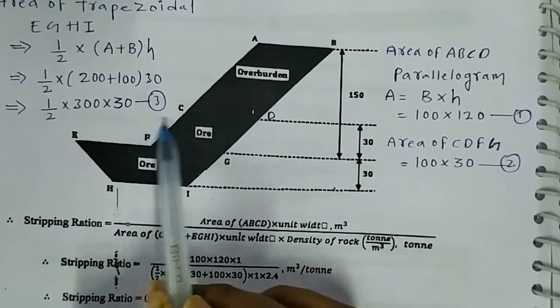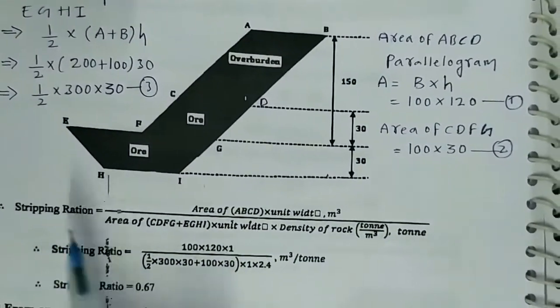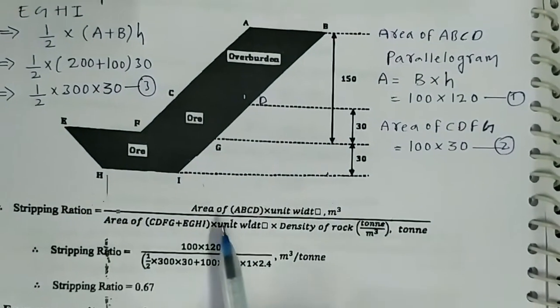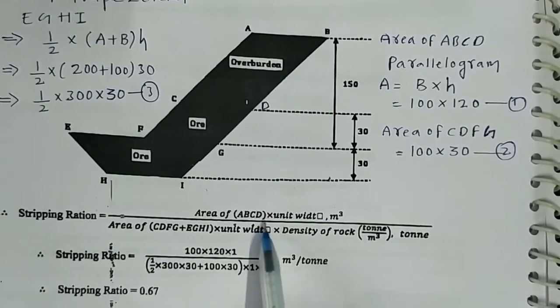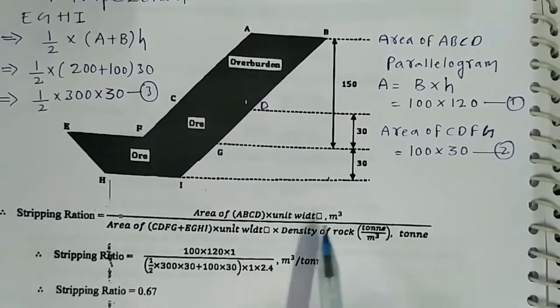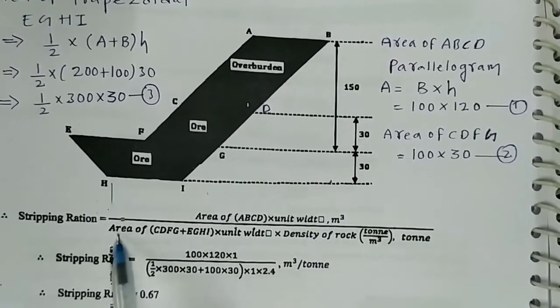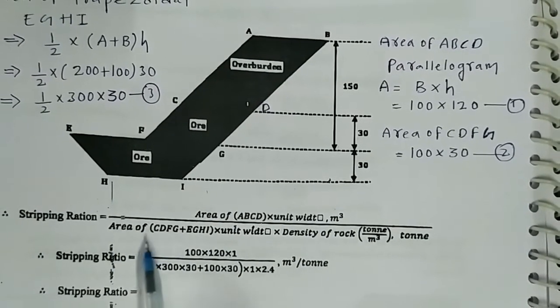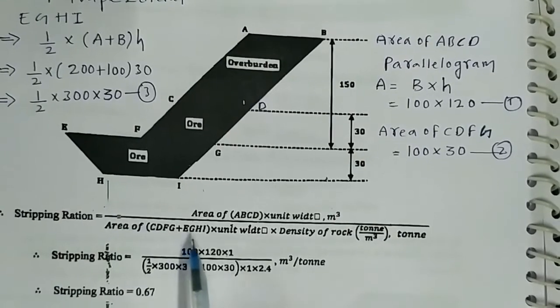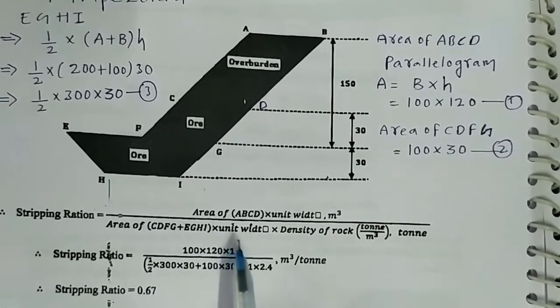The stripping ratio is equal to area of ABCD unit width of meter cube, divided with the area of CDFG plus EGHI into unit width, multiplying with the density of rock in tons per meter cube.